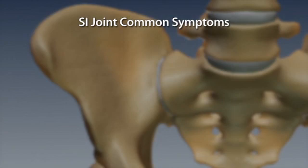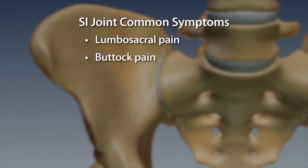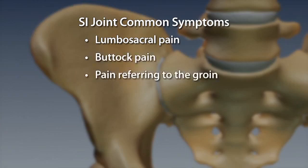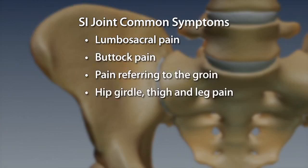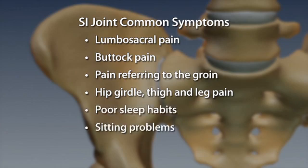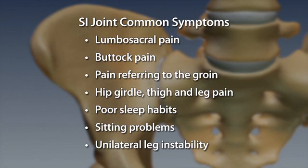SI joint pain syndrome has several common symptoms including lumbosacral pain, buttock pain, pain referring to the groin, hip girdle, thigh and leg pain, poor sleep habits, sitting problems, and unilateral leg instability.